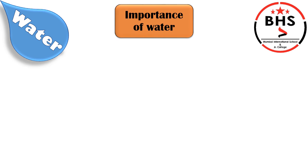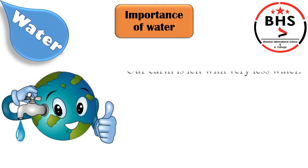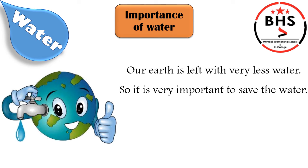Now Part 3, the last part of our lesson — Importance of Water. Our earth is left with very less water. Will this less water be enough for the whole world? No. So it is very important to save water. There are a few ways through which we can save water. First, do not waste water while bathing or washing. Second, reuse the water — for example, after washing vegetables, we can pour that water onto plants. Third, get leaking or broken taps fixed as soon as possible.